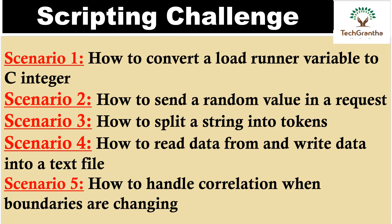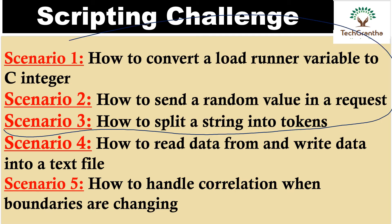Let's give a brief recap of what we discussed so far. In the last sessions we covered up to scenario number 3. We discussed how to convert the loader variable into an integer, then we discussed random values, and how to split a string into tokens using the string token function. Now we are going to discuss scenario number 4 and scenario number 5 today.